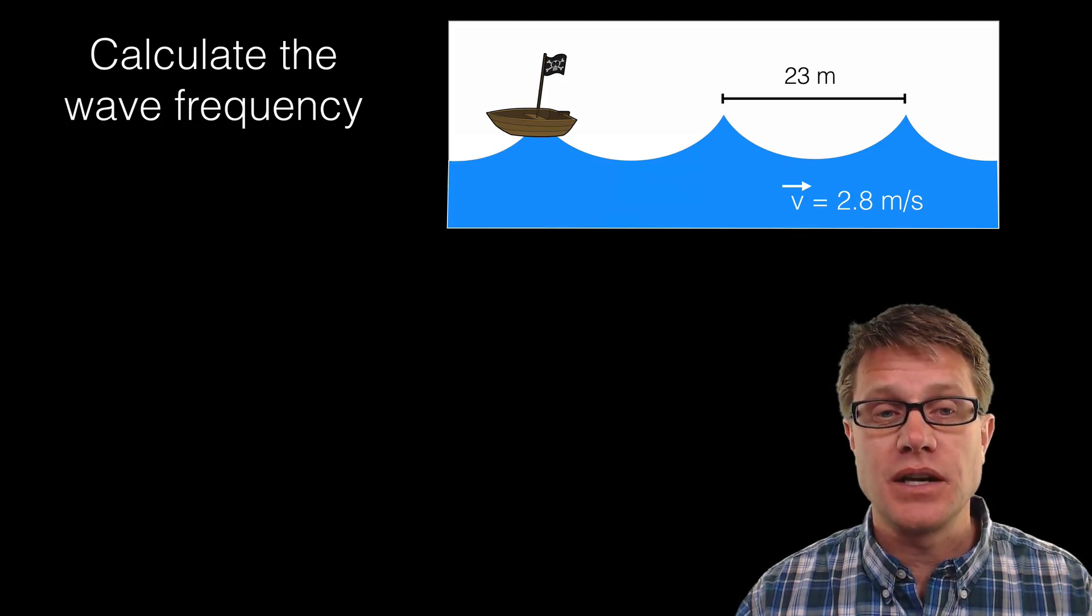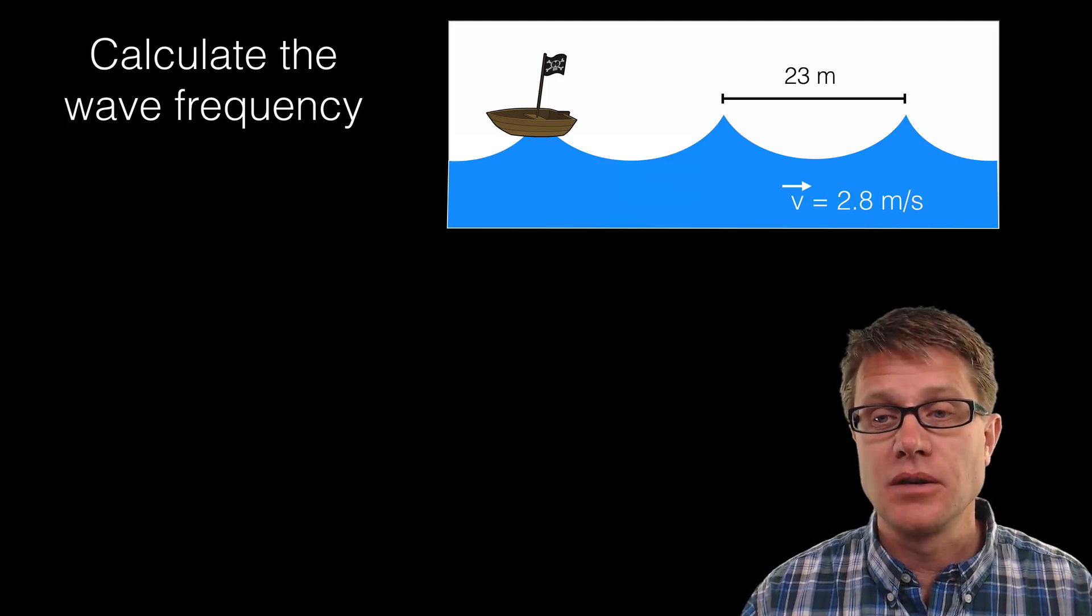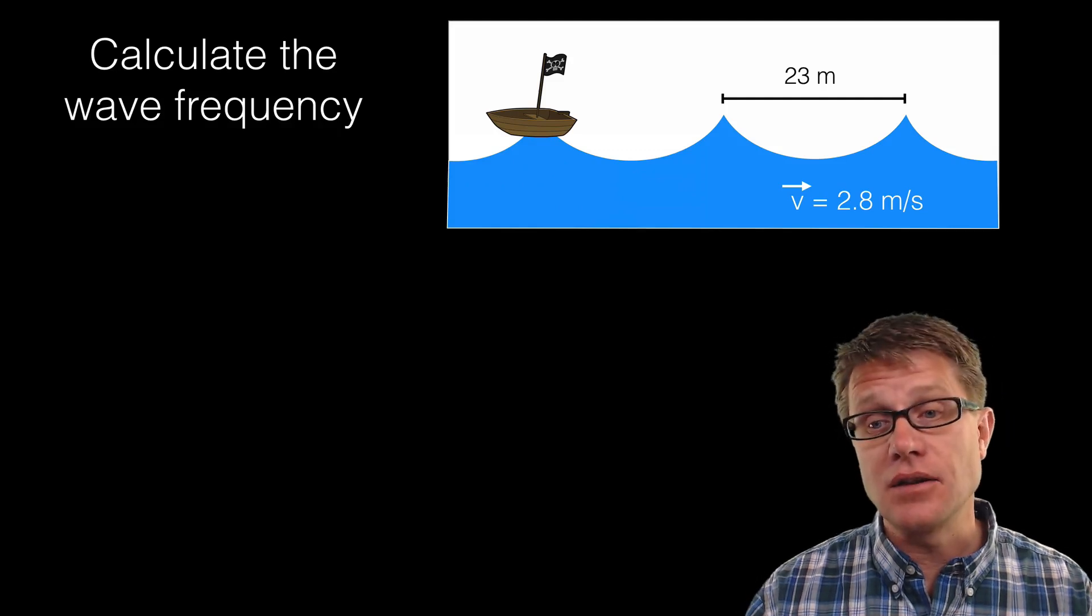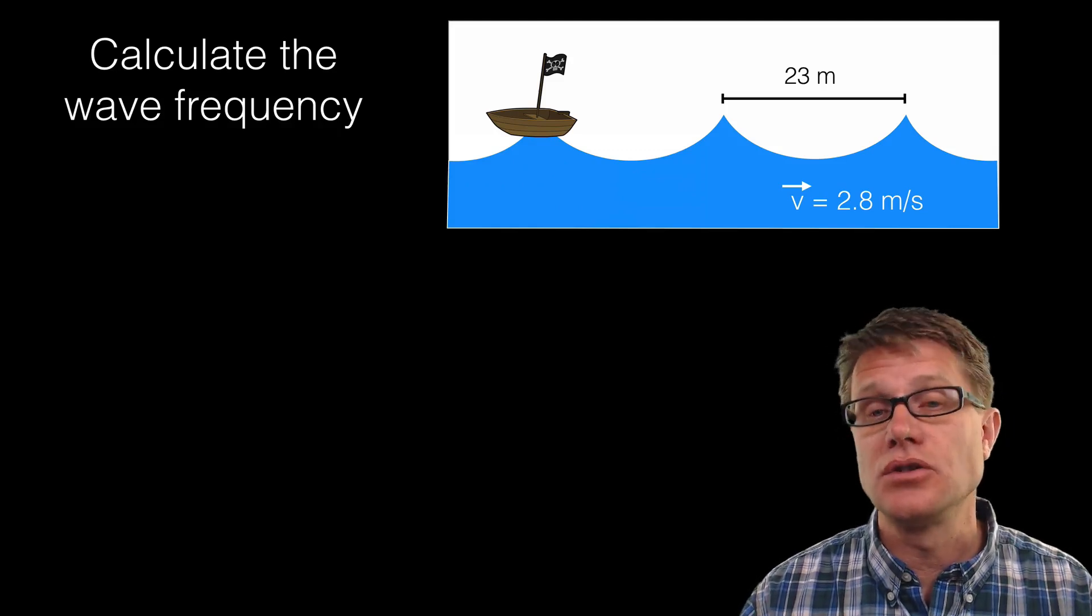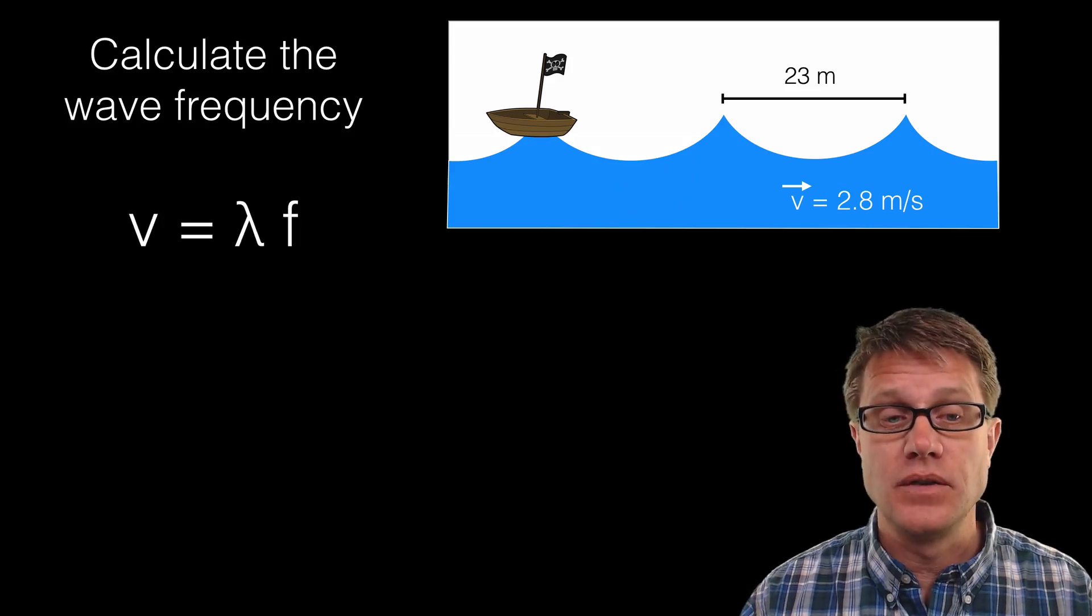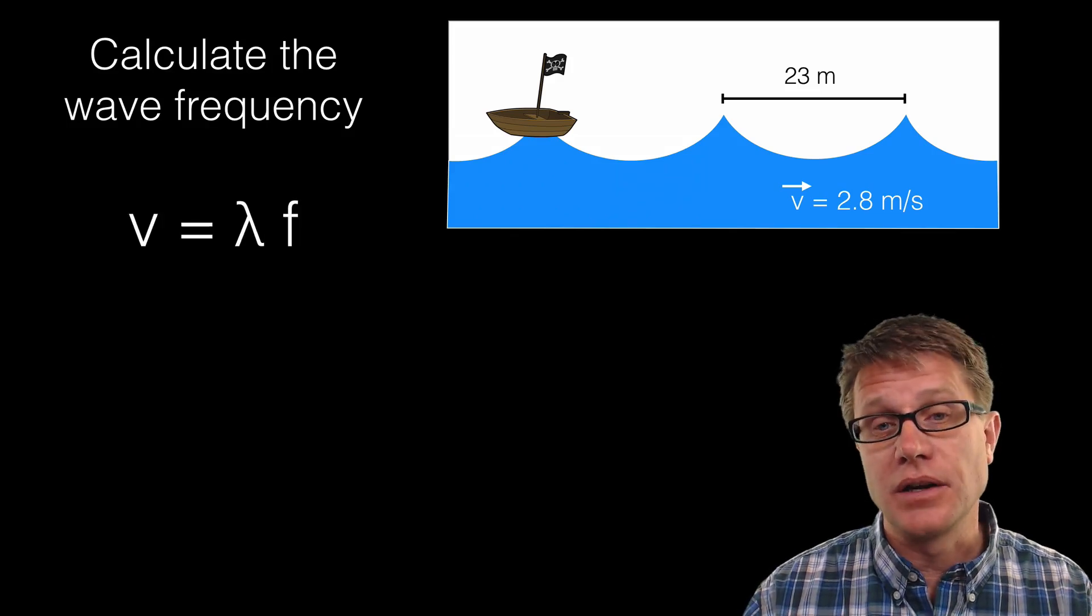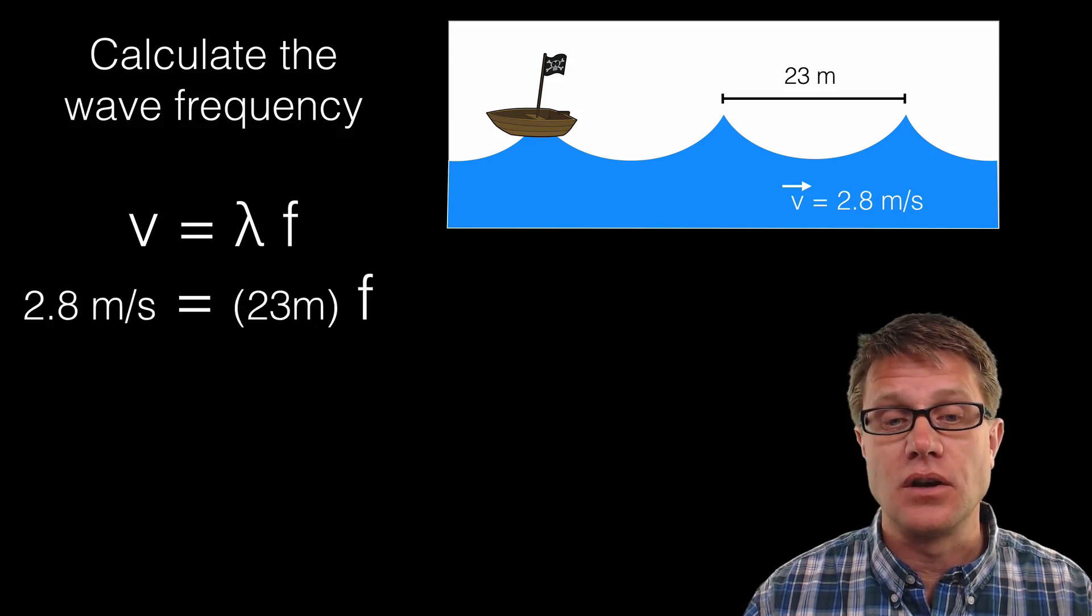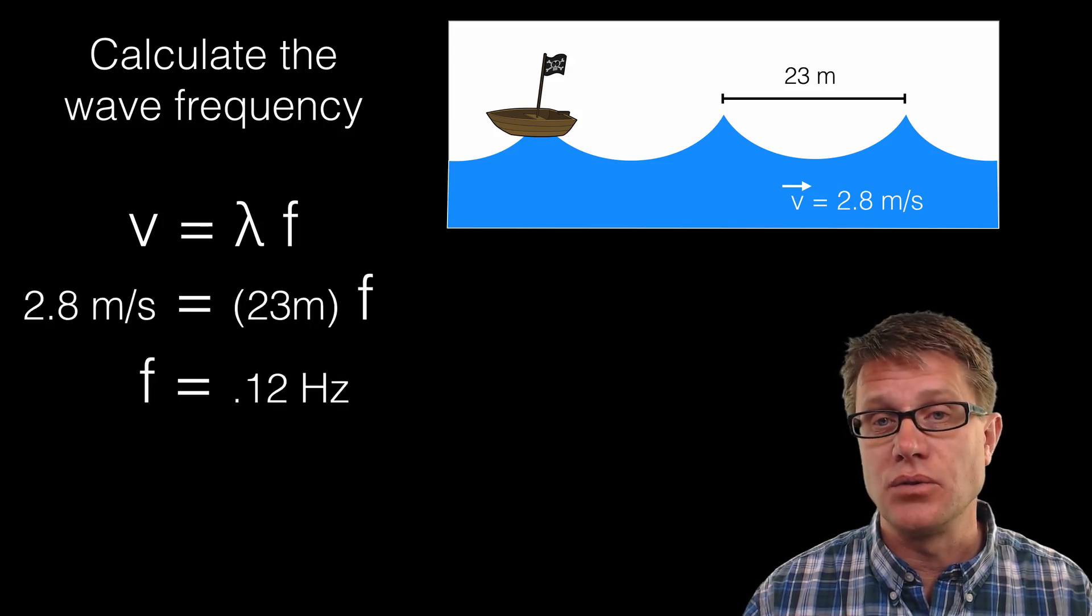Lots of times you will be given problems like this. For example, we are given this picture. You can see the distance between the waves is 23 meters. We know the velocity of the waves is 2.8 meters per second. So could you calculate the wave frequency? So here is my equation: v equals lambda f. I plug in what I know. In this case I know the velocity and I know the wavelength. And I could solve for a frequency of 0.12 hertz.